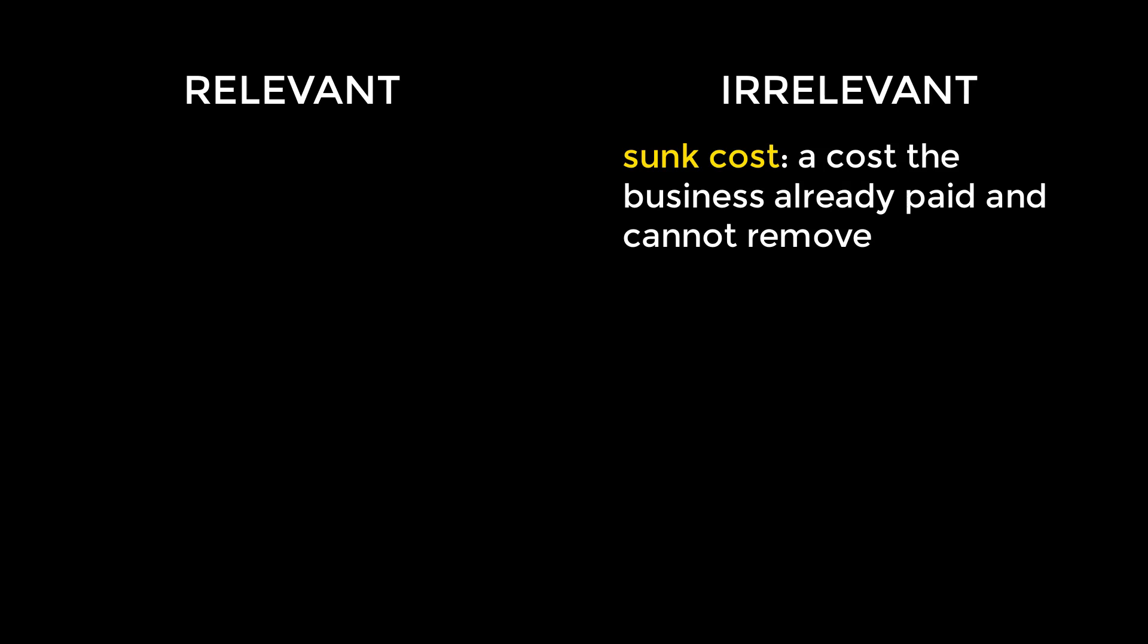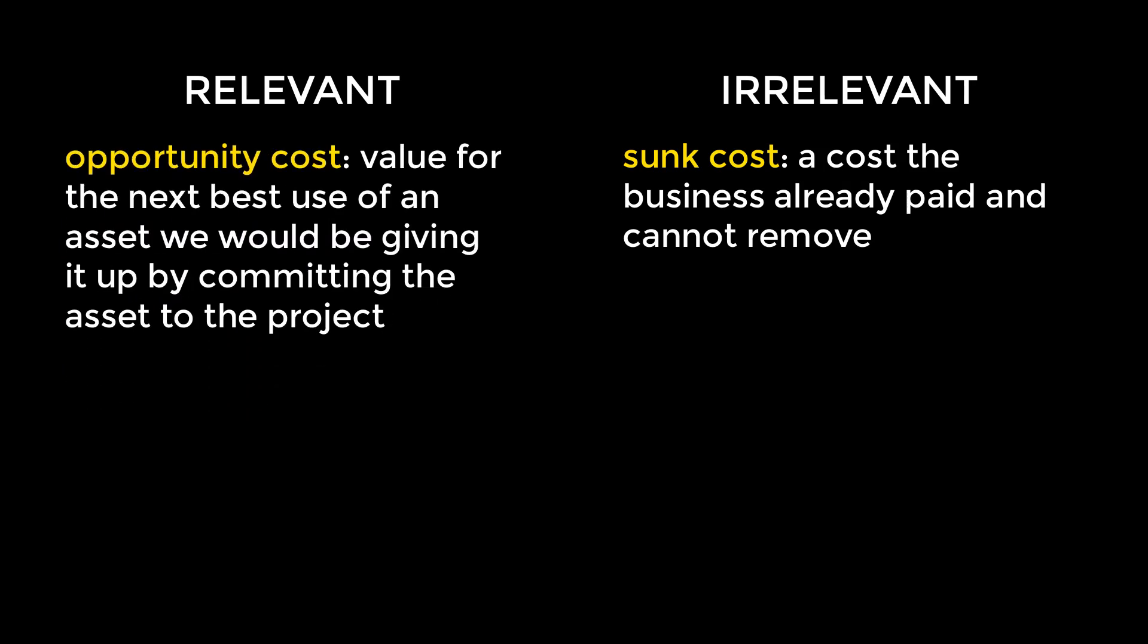It would be more appropriate to include the opportunity cost of converting the property into a mall. An opportunity cost isn't really an expense, but the value of the next best alternative used for an asset that we'd be giving up by using it for something else. Going back to the mall example, suppose the next best alternative is selling the property. Thus, the opportunity cost of converting the property into a mall is the current market value of that property. Because obviously if we're converting it into a mall, we can't sell the land at the same time. We could only do one or the other.